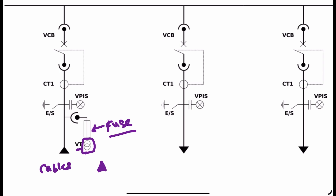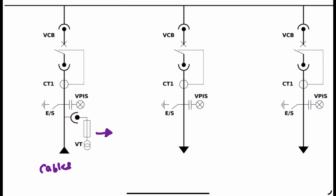This is the symbol of the voltage transformer, and on top of the rectangle you can see a fuse — so it is a fuse-protected voltage transformer. This particular bracket symbol indicates that this voltage transformer is a withdrawable type, meaning if necessary I can completely remove this voltage transformer from the panel. If it were a fixed type, it would have a simple connection without the bracket symbol.